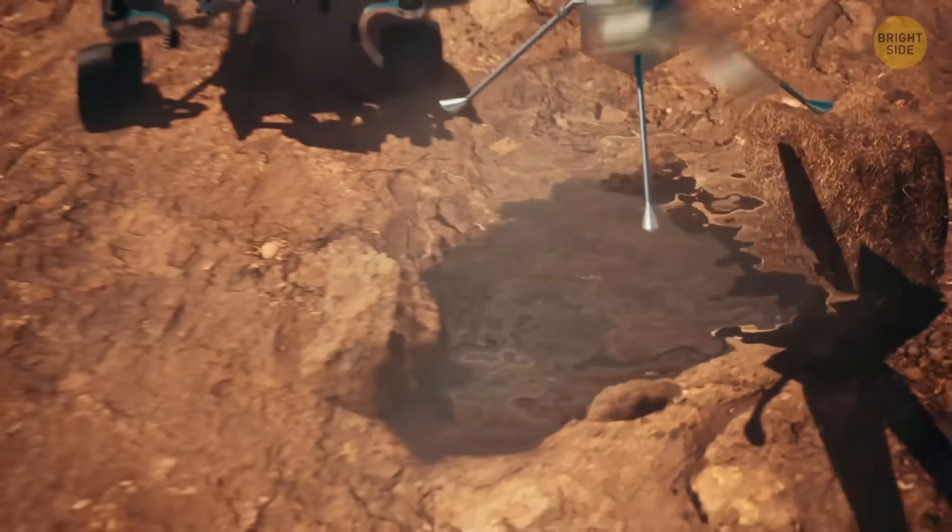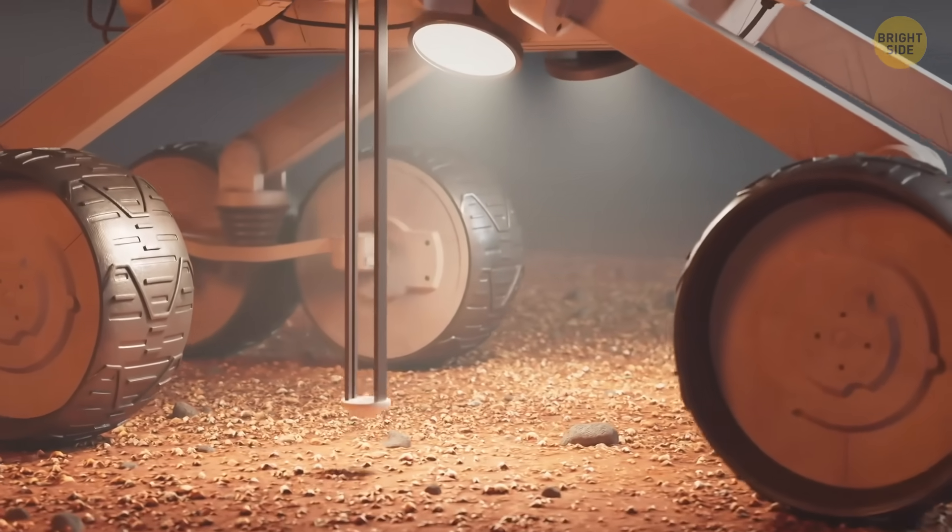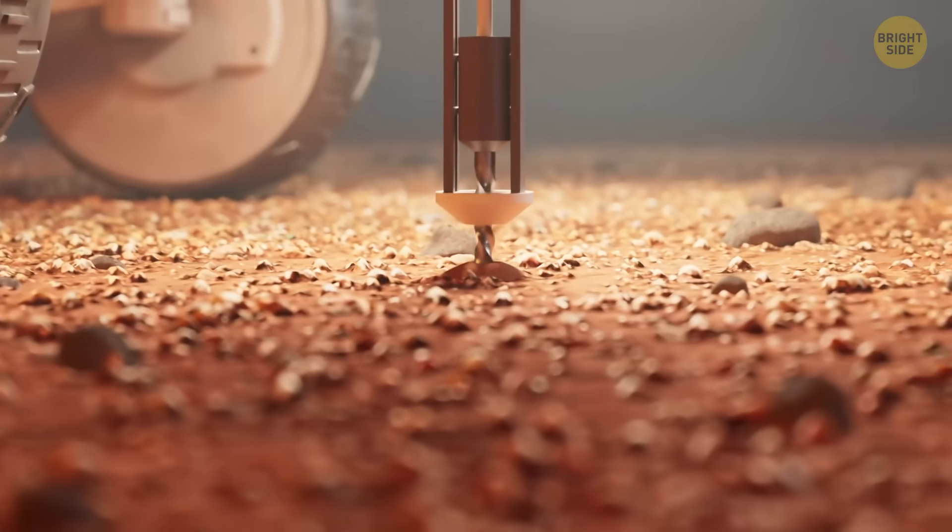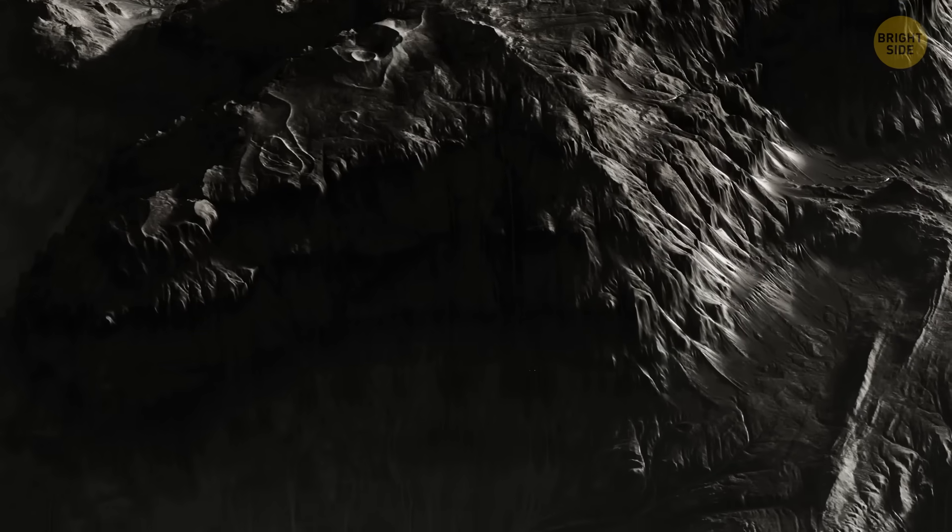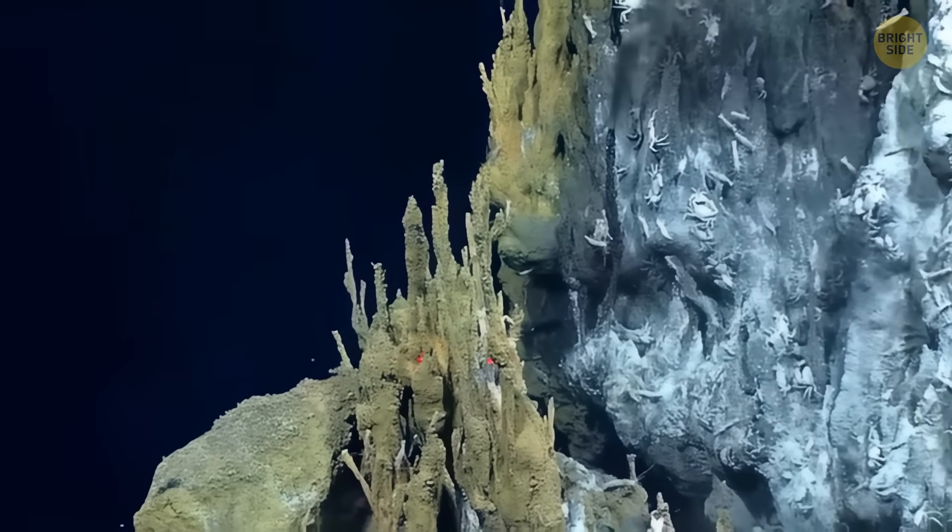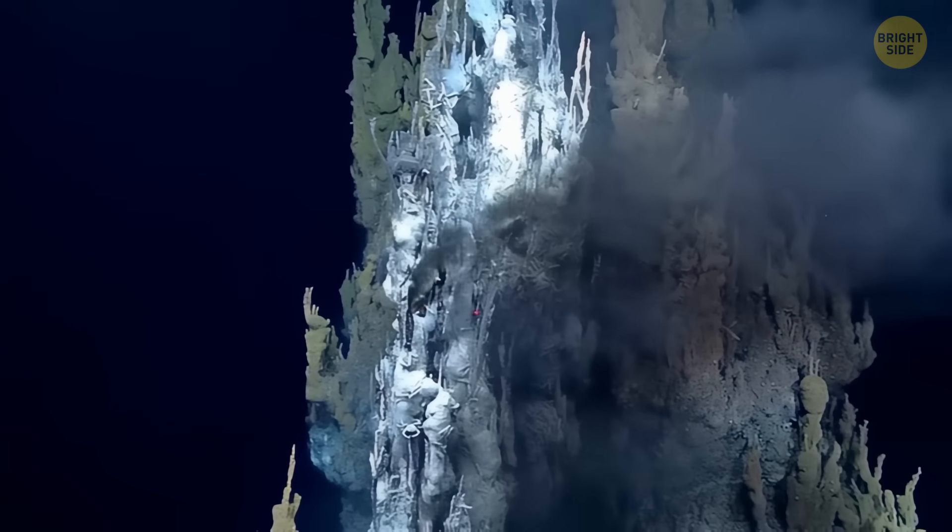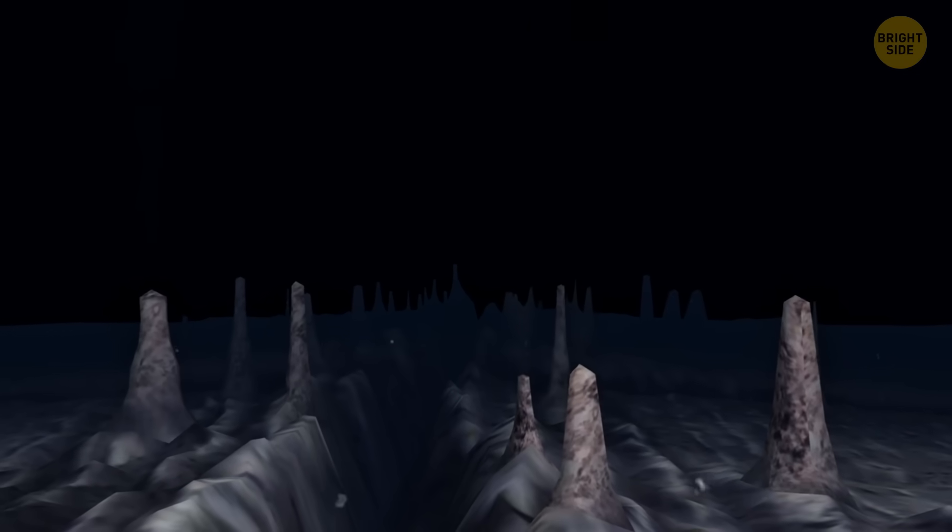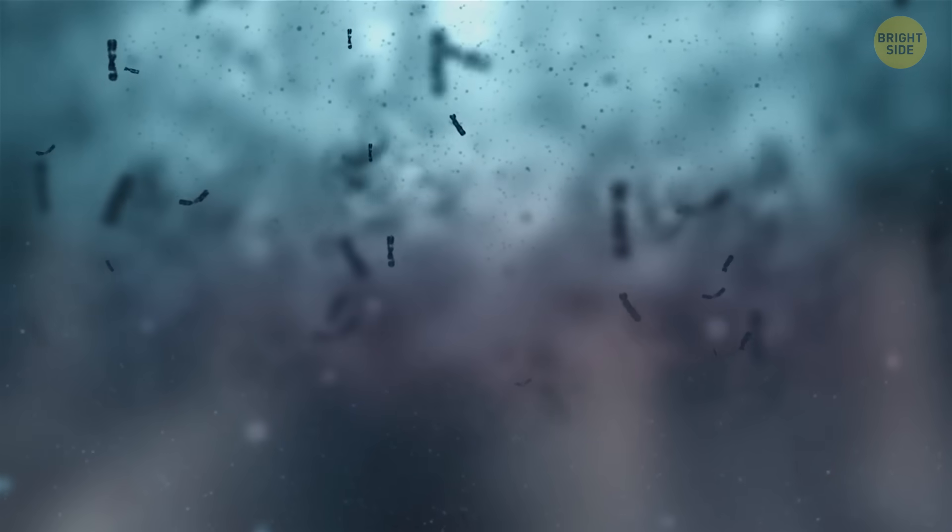And this brings up the most exciting part. Water means potential life. Every time scientists find signs of liquid water somewhere in the solar system, they start whispering that question we all secretly love: could something live there? Sure, Ariel's no tropical resort. But remember, on Earth, we've found microbes thriving near hydrothermal vents at the bottom of our oceans, living off chemicals, not sunlight. If Ariel once had similar vents pumping heat and minerals into its ocean, it could have easily hosted its own microscopic residence.